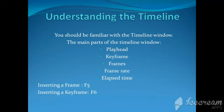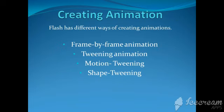The frame rate is 12.0 by default, but you can change it. The frame numbers start from 1 and go on. Flash has different ways of creating animation: frame-by-frame animation, tweening animation, motion tweening, and shape tweening. In frame-by-frame animation, you have to select different frame points and insert key frames one by one, and then you can apply the animation.